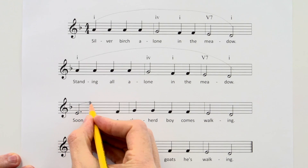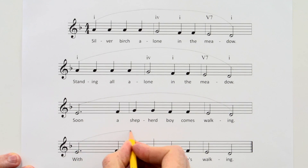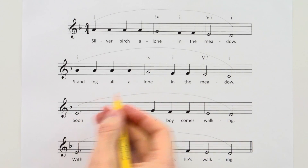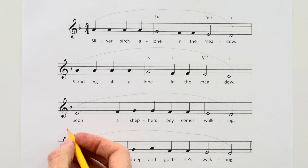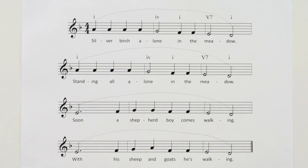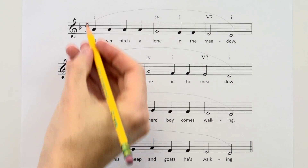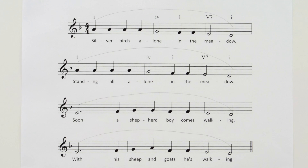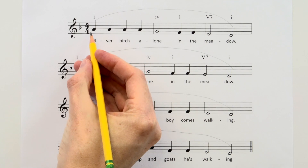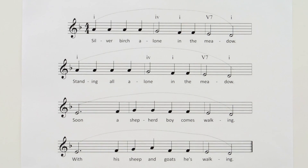Then we have a third phrase: "Soon a shepherd boy comes walking." And then the last phrase of the song. It so happens that in this song all the phrases line up, where one line is one phrase — but it doesn't have to be that way; sometimes a phrase can continue on to the next line. Now phrasing is the art of making each phrase beautiful, interesting, or meaningful. For example, without phrasing it might be very robotic, but with phrasing you make the notes interesting — starting a little softer, getting louder in the middle, and getting softer at the end.